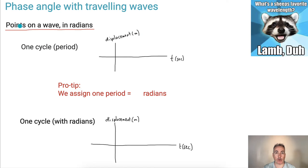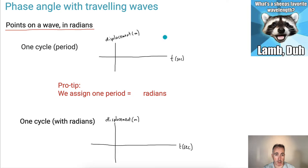Let's first look at what about points on a wave, and we're going to talk about radians, because depending on which math class you take, you may not have already learned about radians. So if you've already done radians, this will be easy. If you haven't, then this will be a little bit new.